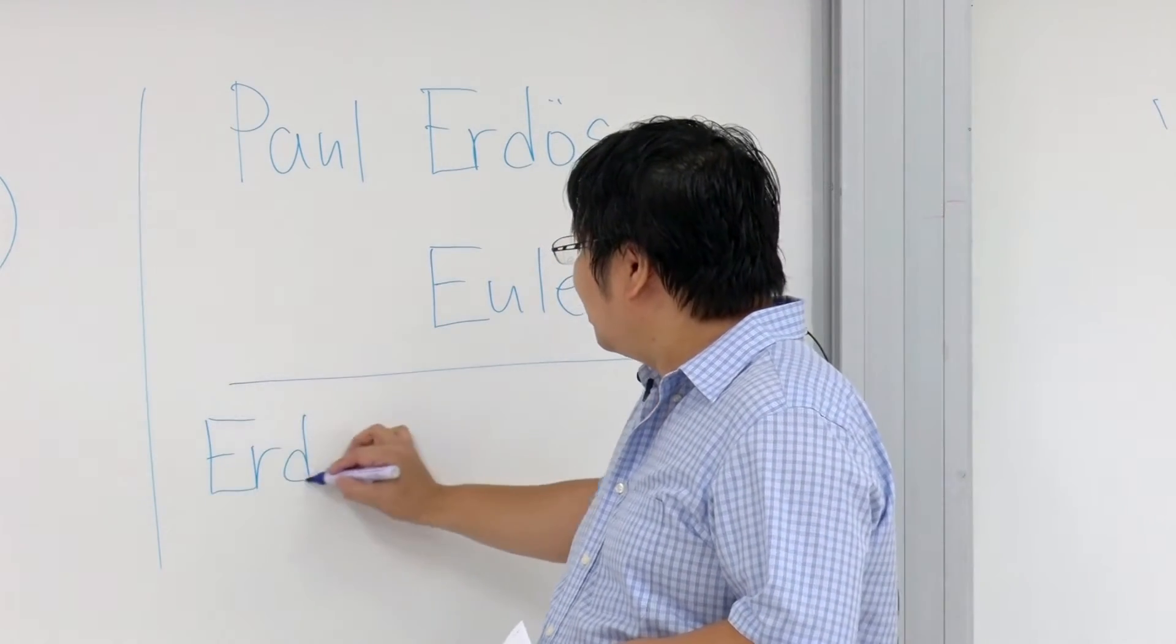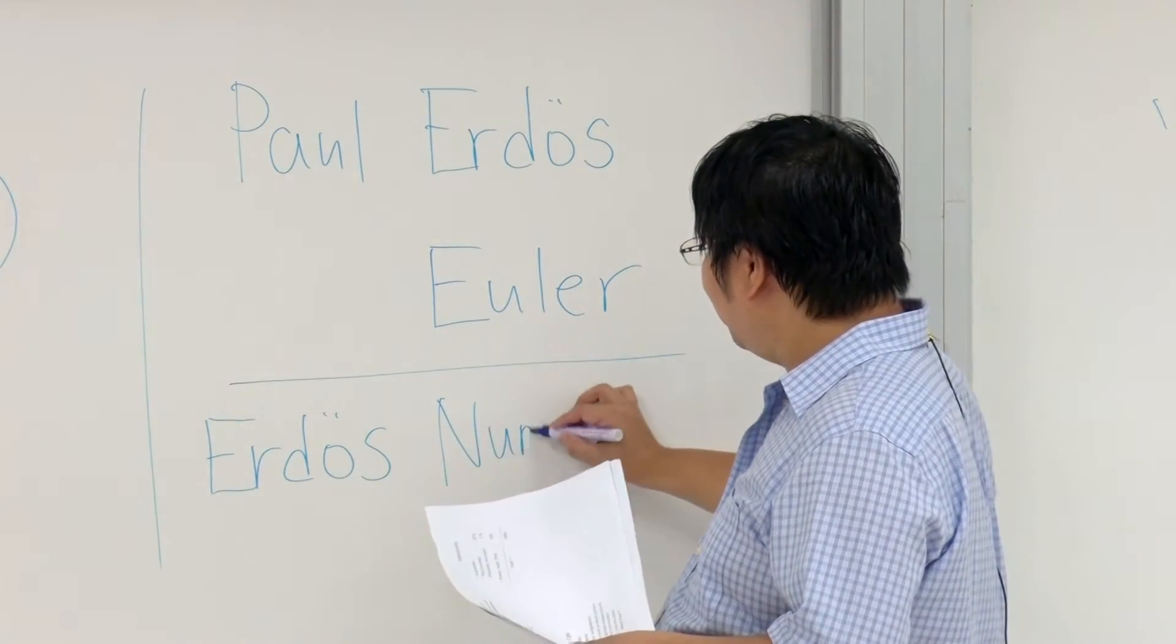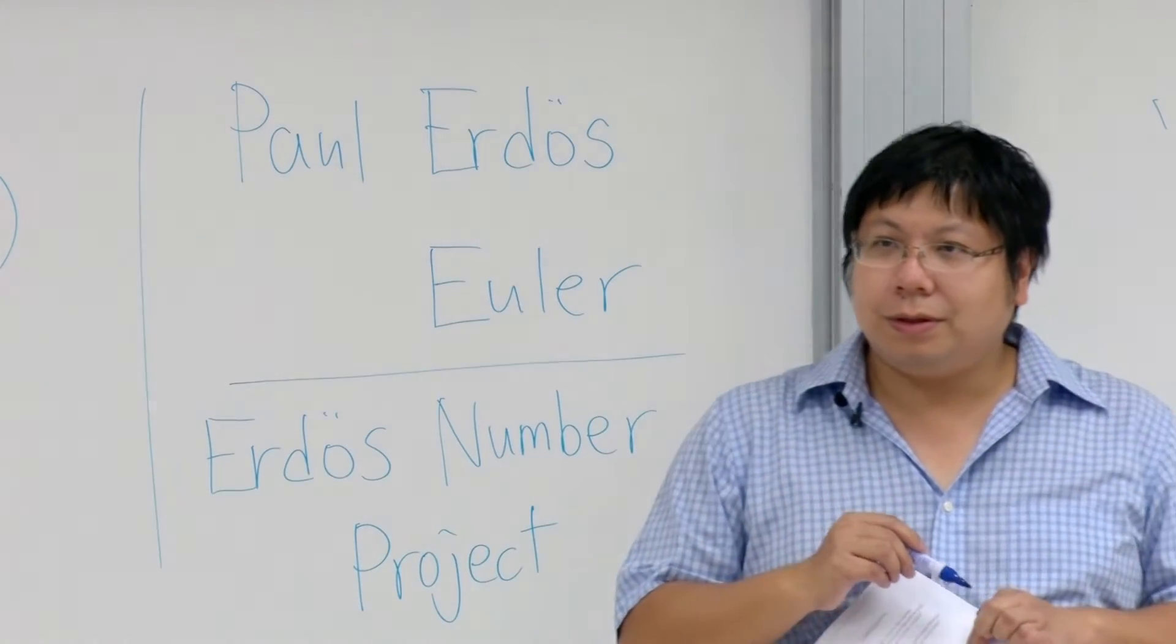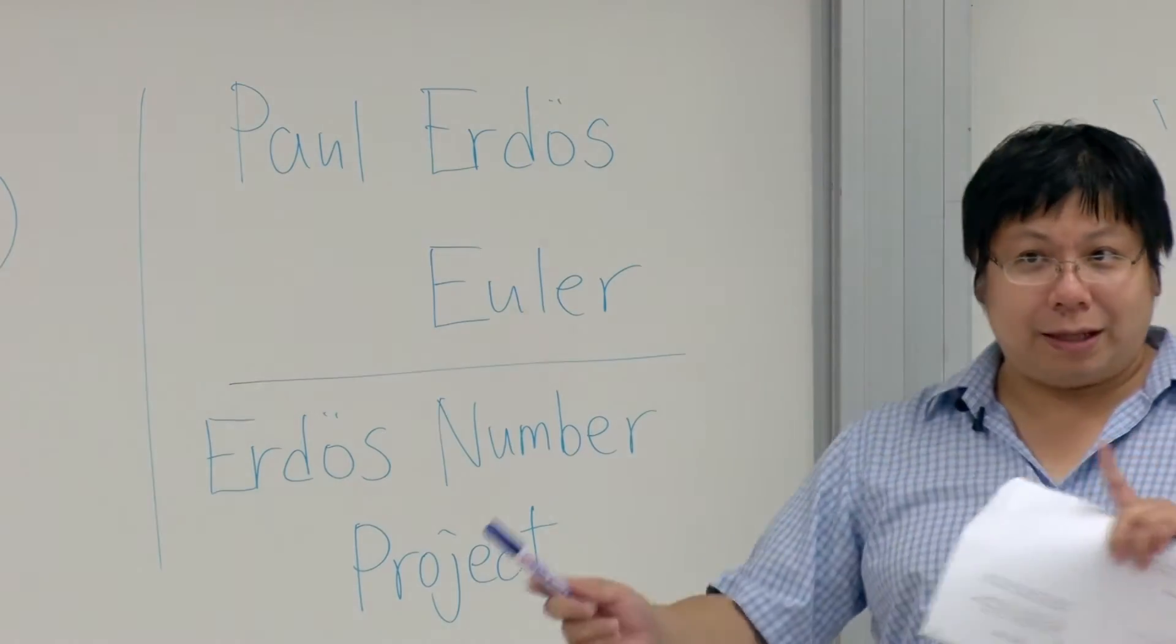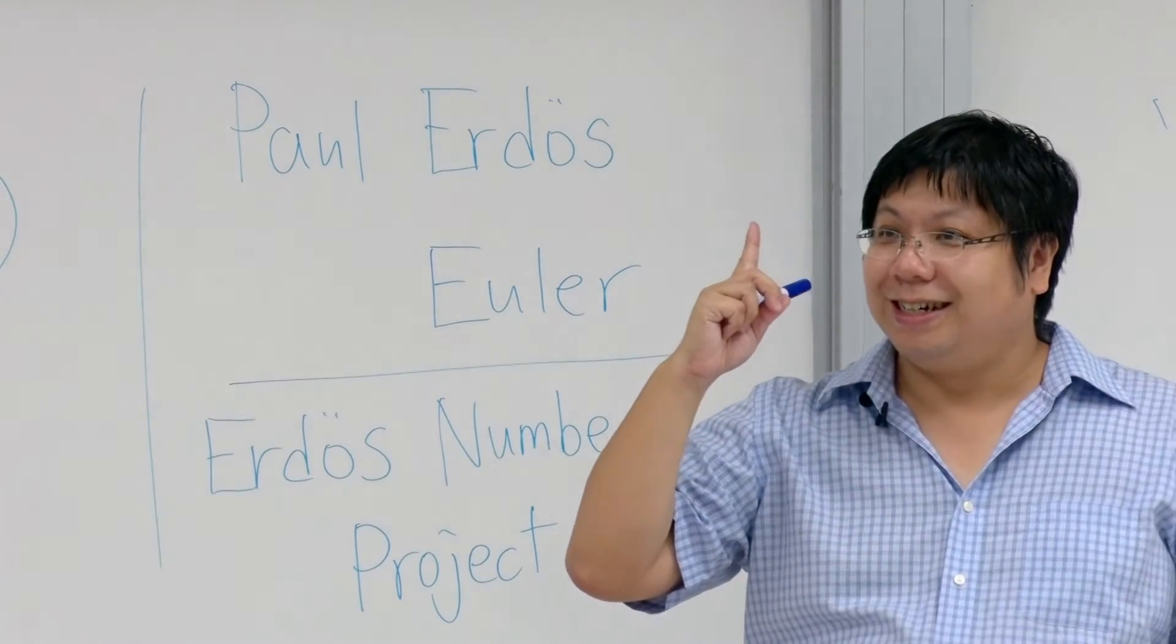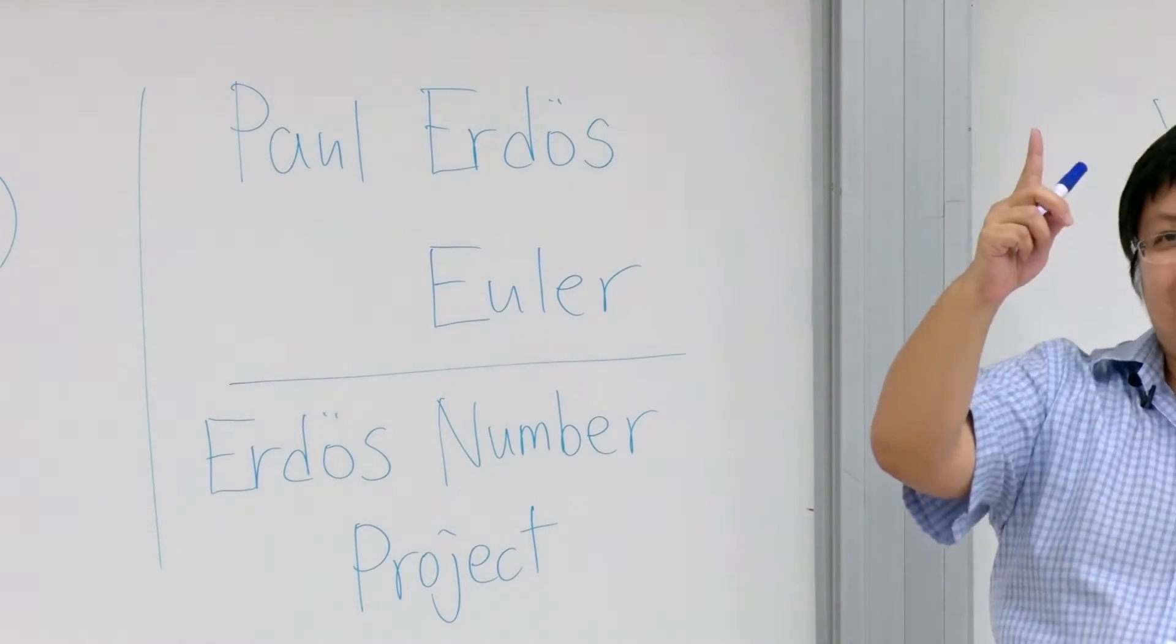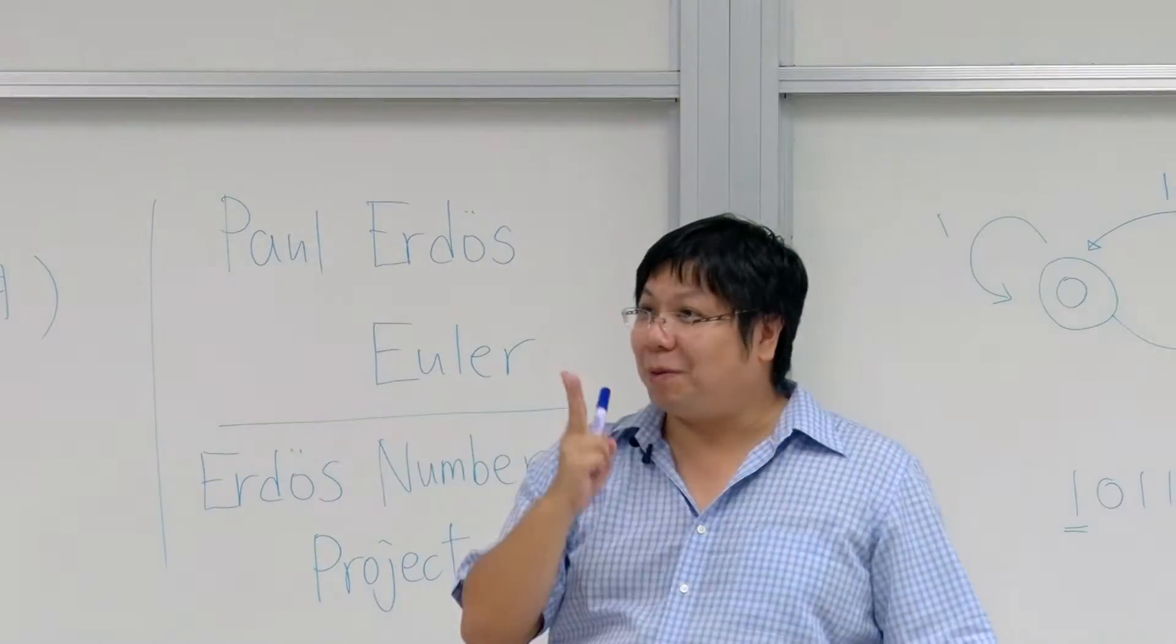And if you search the internet some years ago, after Erdős dies, people created a project called Erdős number project. So if you have a direct publication with Erdős, you have Erdős number one. If you do not have Erdős number one, but if you have written something together with Erdős number one people, then you have Erdős number two. Do you understand my point?